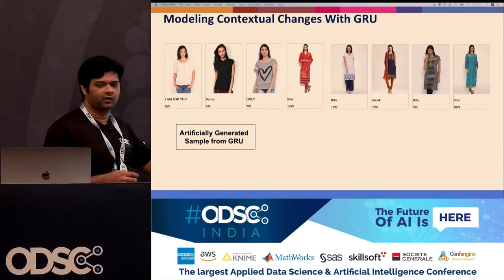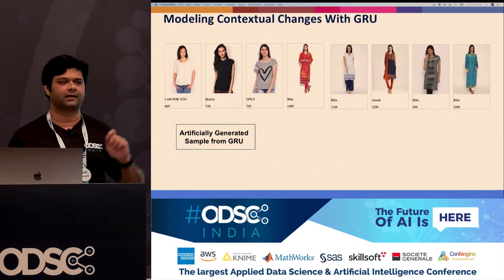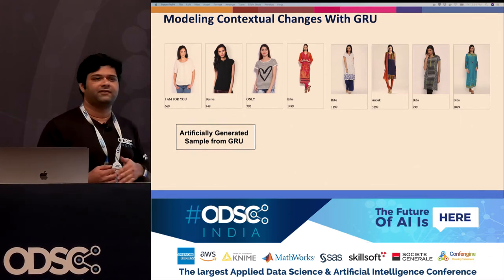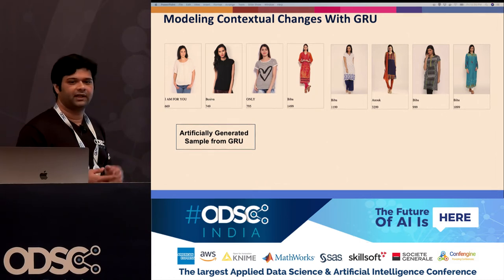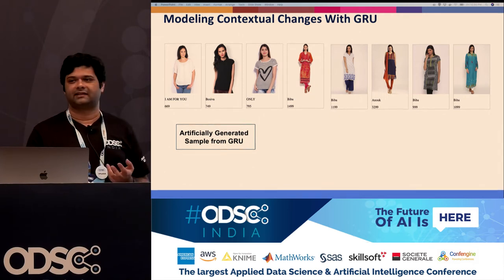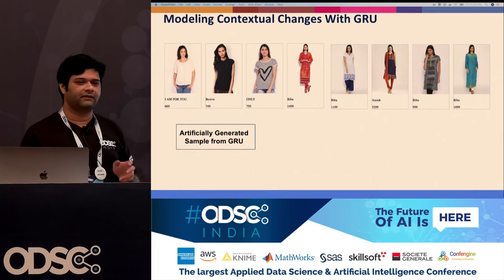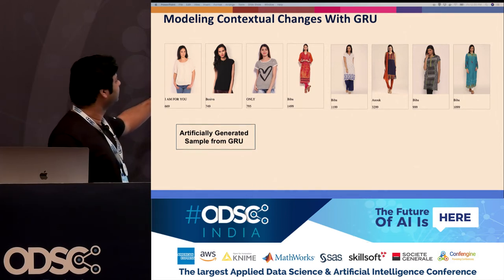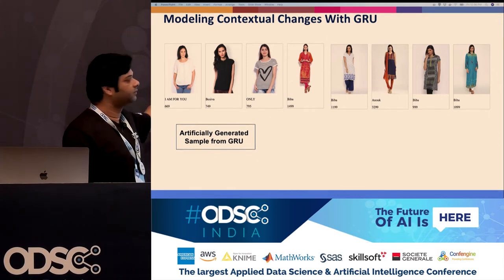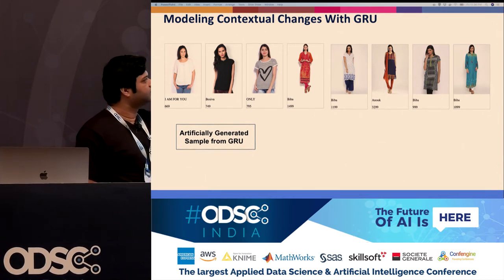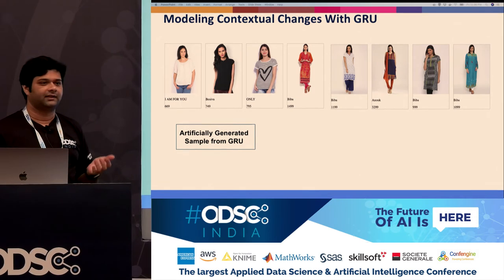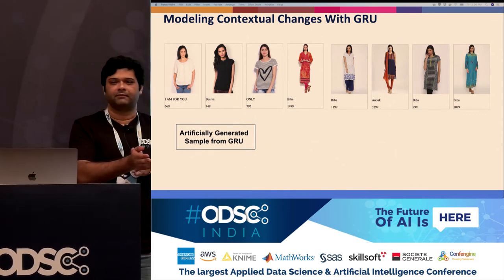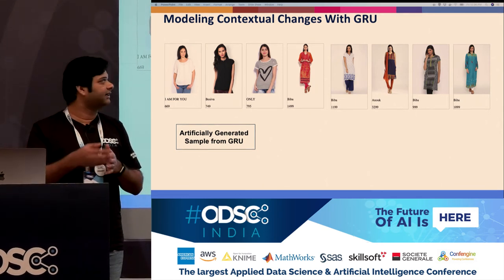We also wanted to see how the model works under the hood. We artificially generated sessions from the model to observe trends it's capturing. In one generated session, you could see it started with a lot of Western wear sequentially, and then switched to Indian wear — something we actually observed in our data, where if someone keeps looking at Western wear and can't find something relevant, they switch to Indian wear. Many people may be more comfortable with Indian wear, so they ultimately switch and end up buying Indian wear.